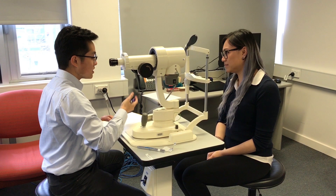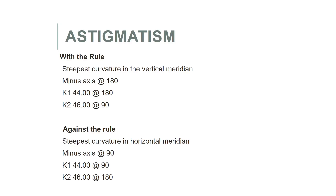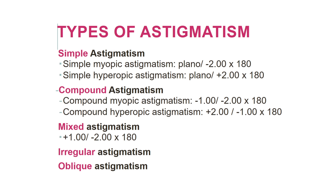So what do the results mean? Ms Ling had a K1 reading of 45 at 180 degrees, which represents the horizontal meridian, and a K2 reading of 46.5 at 90 degrees, representing the vertical meridian. This means that her astigmatism is with the rule, as her steepest curvature is in the vertical meridian. Against the rule astigmatism has its steepest curvature in the horizontal meridian rather than the vertical.